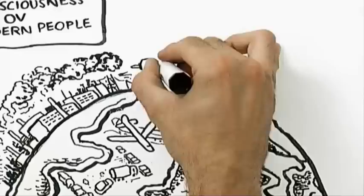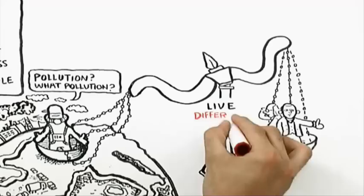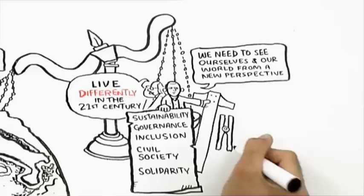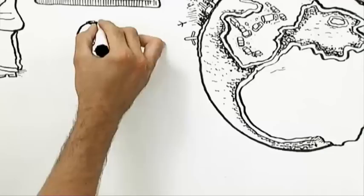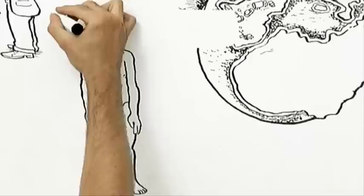So whilst I don't underestimate the ability of human beings to invent and to adapt, in the end, on balance, I do favor the view that we need to live differently in the 21st century. And as the architects of the enlightenment understood, to live differently involves thinking differently, involves seeing the world and ourselves from a new perspective.